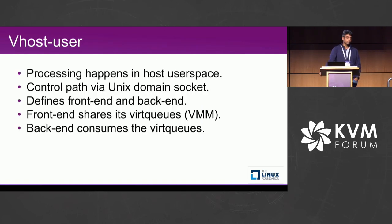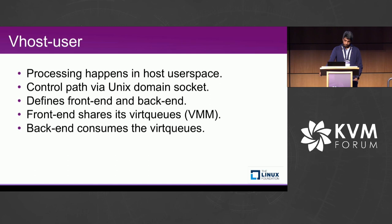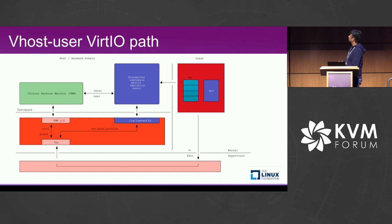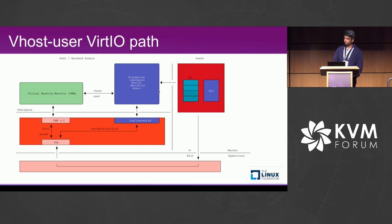Vhost user protocol complements the Vhost protocol in the sense that the control plane is implemented via Unix domain sockets. The main purpose of Vhost user is to implement the backend — the vhost user daemon — in user space instead of the kernel. The Vhost user protocol defines two major entities: frontend and backend. The frontend is the entity which shares the virtqueues — it is really the VMM, like QEMU, which shares its virtqueues. The backend is the entity which consumes the virtqueues. A standalone user space device emulation daemon talks to the VMM over the Vhost user protocol using a Unix domain socket and processes the virtqueues from the guest.